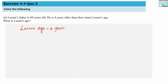So 3 times Lakshmi's age is 3 × x. He is 4 years older, so we add 4 to get 3x + 4. We know Lakshmi's father's age is 49 years, so this equals 49. This is our equation: 3x + 4 = 49. Solving this will give us x, which is Lakshmi's age.